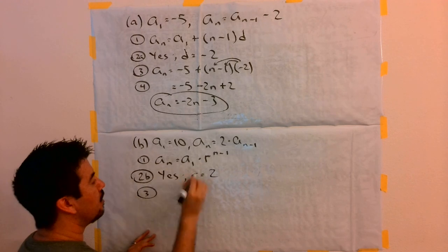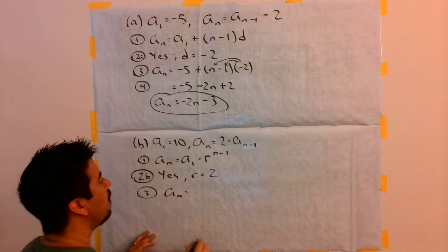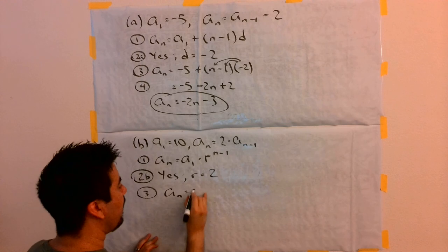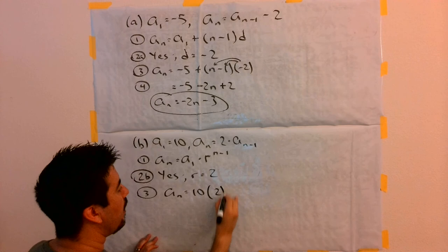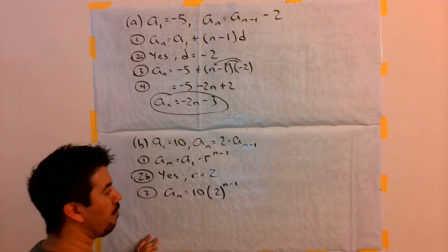So, I'm going to rewrite this explicit rule. a of n is equal to, well, a1 is 10. And then, in parentheses, I'm going to write the r value, which was 2, and that's going to be raised to the n minus 1.